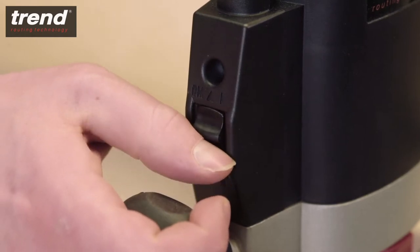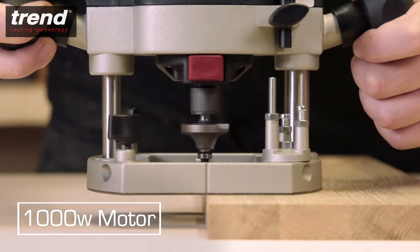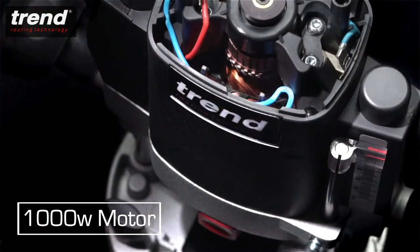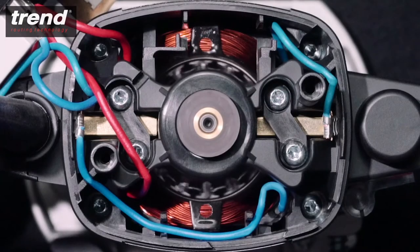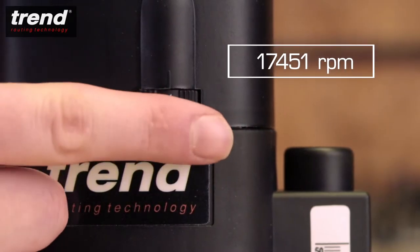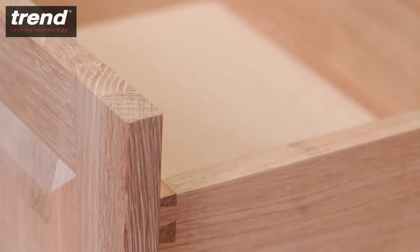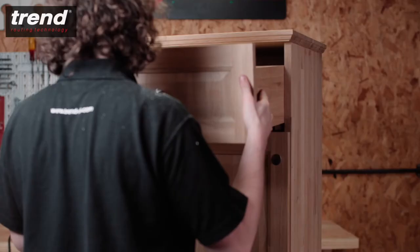It has a powerful 1000W motor with electronic variable speed control under load from 9000 to 27000 RPM. This ensures a fine finish on all types of material.